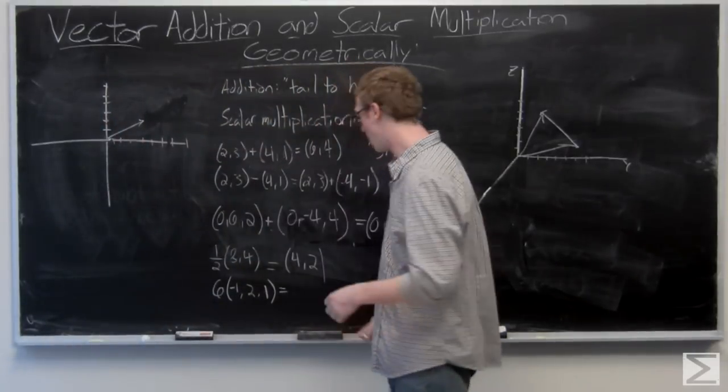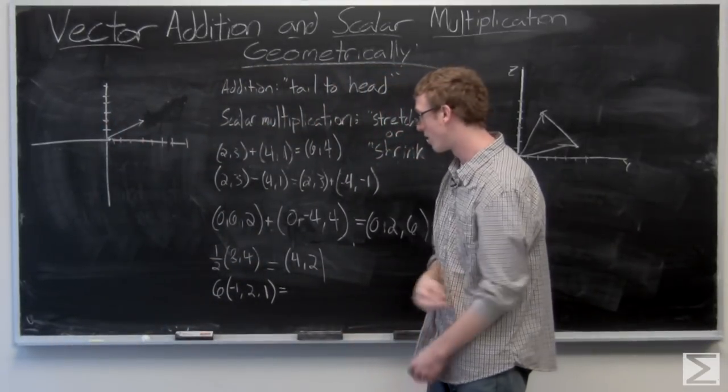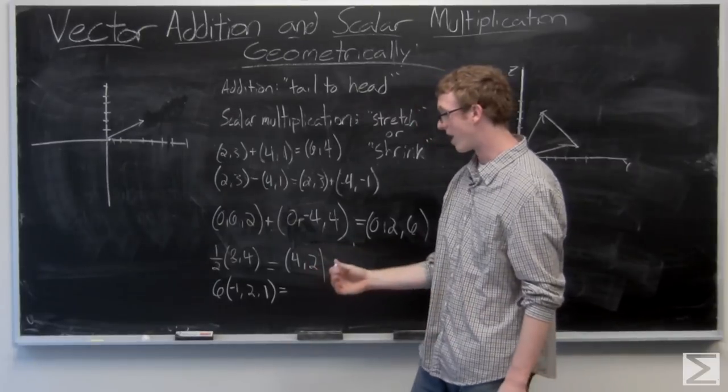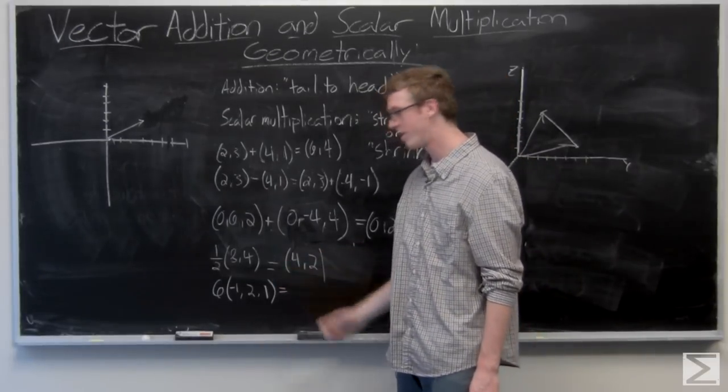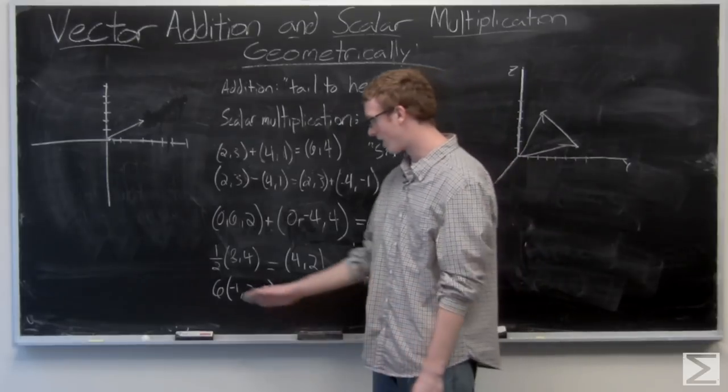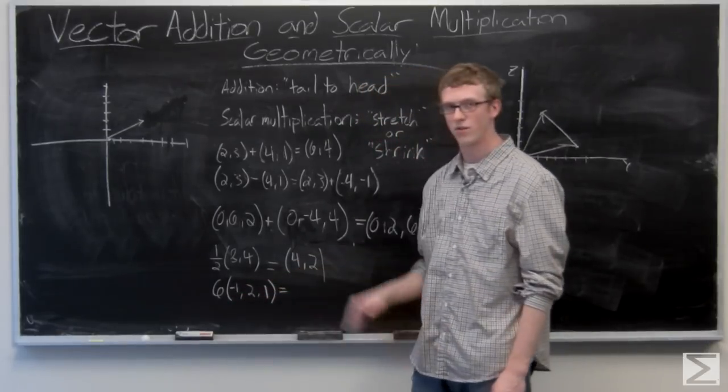Now I'll take a look at one in three space as well. We have -6 times (-1, 2, 1). That's a vector. We're just going to multiply component-wise: (-6, 12, 6).